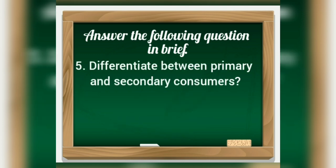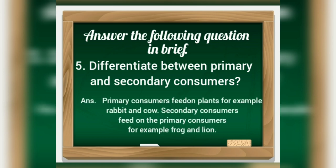Fifth, differentiate between primary and secondary consumers. Answer: Primary consumers feed on plants — for example, rabbit and cow. Secondary consumers feed on the primary consumers — for example, frog and lion.